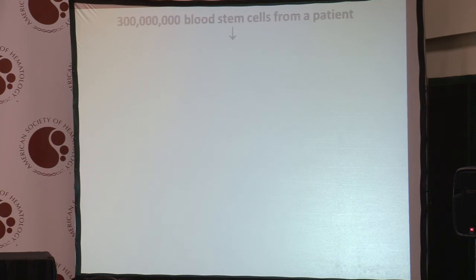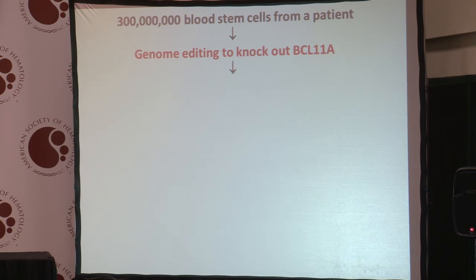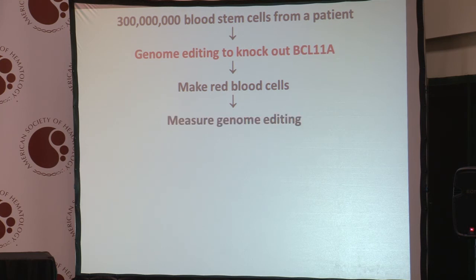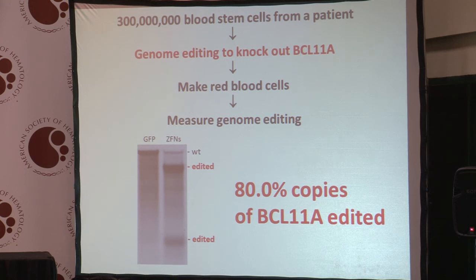When we actually do that, what happens? We take up to 300 million blood stem cells from a patient — that's enough to treat pretty much any person. Then we do genome editing to knock out BCL11A. We make red blood cells, and before they lose their nucleus, we measure genome editing. This gel shows that we obtain in a single step 80% — 8-0 — single step targeted genome editing in human hematopoietic stem cells.